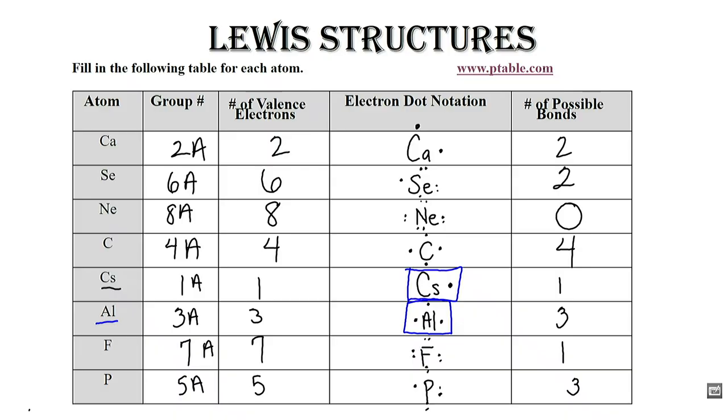Fluorine is in group 7A, it has seven valence electrons. Here we see our structure for fluorine.